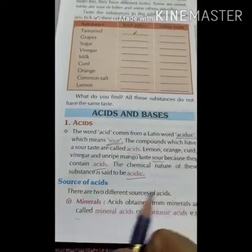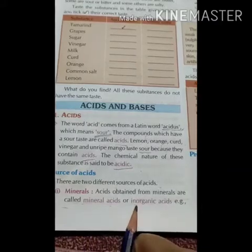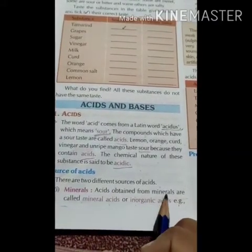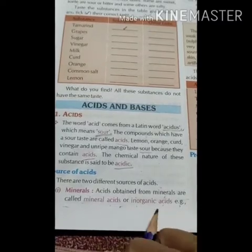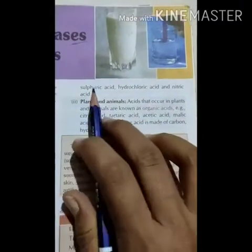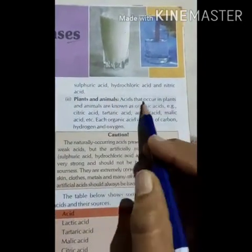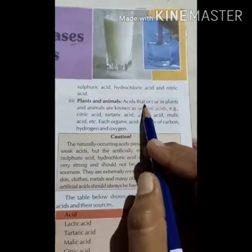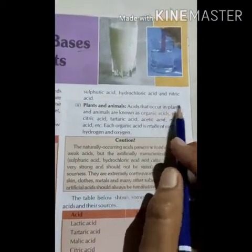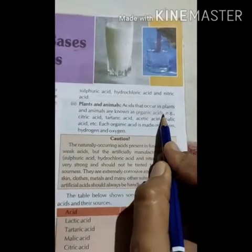What are the sources of acids? There are two different sources. Acids obtained from minerals are called mineral acids or inorganic acids. Examples include sulfuric acid, hydrochloric acid and nitric acid. Acids that occur in plants and animals are known as organic acids.